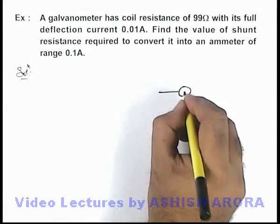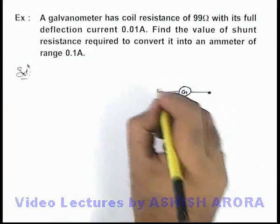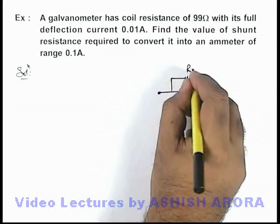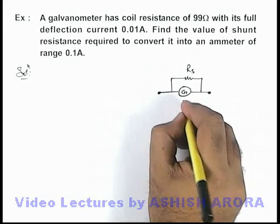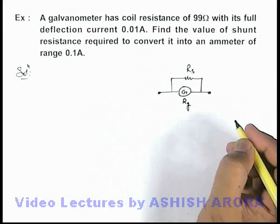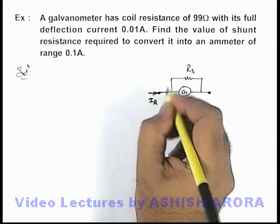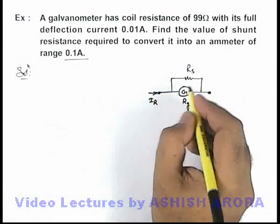A galvanometer can be transformed into an ammeter by connecting a shunt resistance in parallel with the galvanometer. Here the coil resistance of galvanometer is taken as Rg, and we know when a current Ir, which is the range of ammeter, here it is 0.1 ampere, flows...